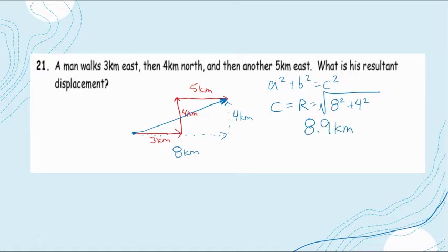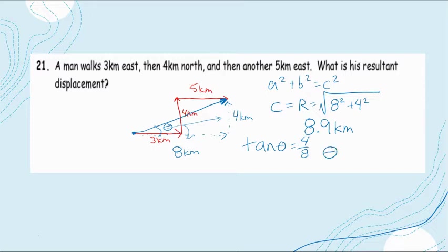The next part is to find the direction by figuring out our angle. We know opposite over adjacent is tangent, so tan θ equals 4 divided by 8, which is one half. Therefore θ equals inverse tan of one half, giving us 26.6 degrees.